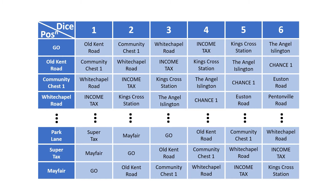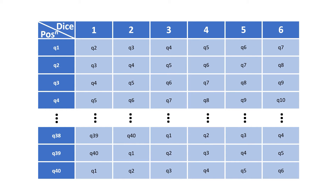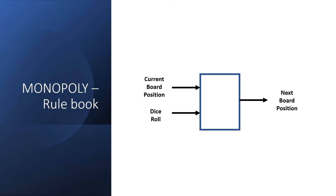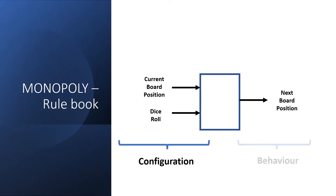What this means is that while the rulebook with the street names is more human-readable, both of these rulebooks contain the same information, and they're actually interchangeable with a small conversion chart. So now I want to build a physical rulebook in my Turing machine. We need a piece of hardware that takes the current board position and the number rolled on the dice, and outputs the next board position. Turing called these inputs the configuration and the output the behavior, although these terms aren't really used that commonly anymore.